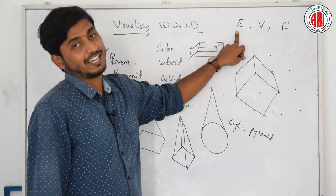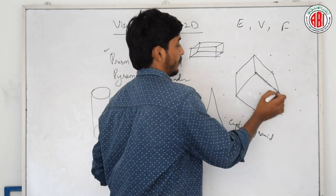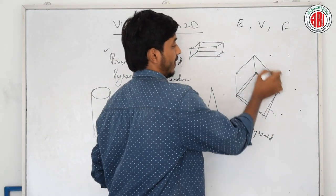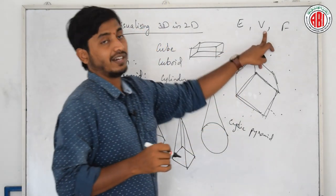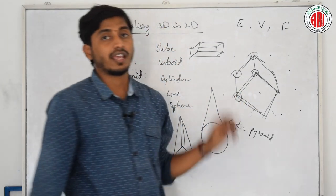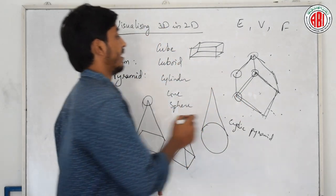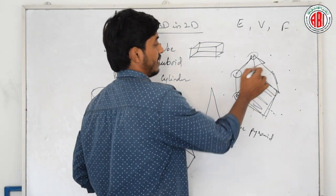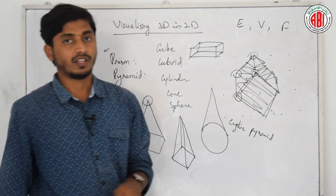What are these? E is edge. Edge is this line. 1, 2, 3, 4, 5, 6, 7 like that. V is vertices. Vertices is these points. F is face. This area. This is one face. This is one face. This is one face.